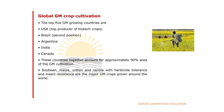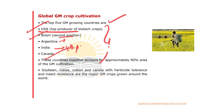Regarding global GMO crop cultivation, the top 5 producing countries are: USA in the top position, followed by Brazil in second, Argentina in third, India in fourth, and Canada in fifth. These five countries together account for approximately 90% of the area under GMO cultivation globally.